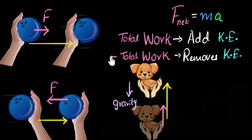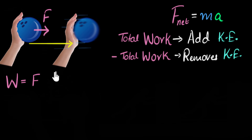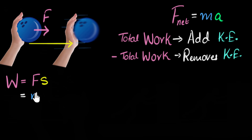Now that we have some idea of the work-energy theorem, let's derive the mathematical equation — this will be useful for problem solving. I need to connect work and kinetic energy. Starting with just one force acting on the body, the work done by that force equals force multiplied by displacement S. I want to bring velocities into the picture, so I'll substitute F = ma, giving me m × a × s.